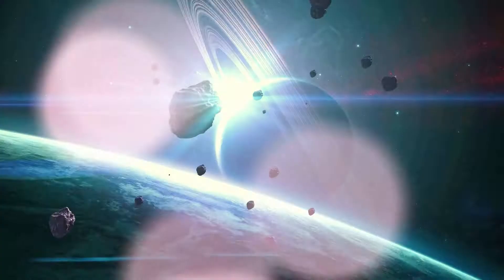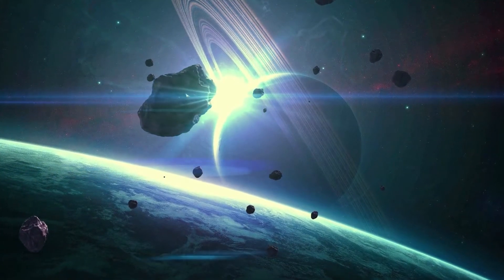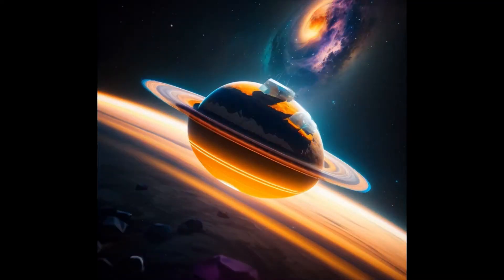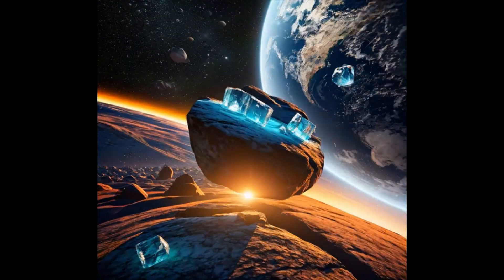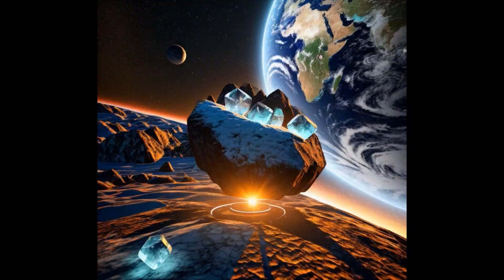Saturn's rings are made of ice and rocks, and they encircle the planet like shimmering locks. Titan, its moon, has lakes of methane, and its beauty and mysteries continue to entertain.